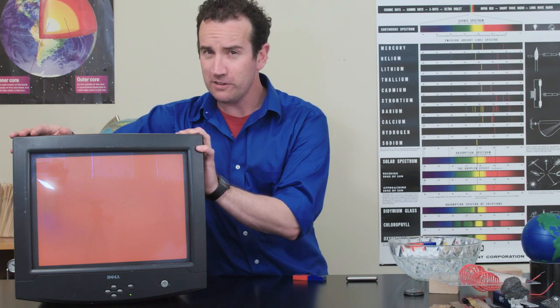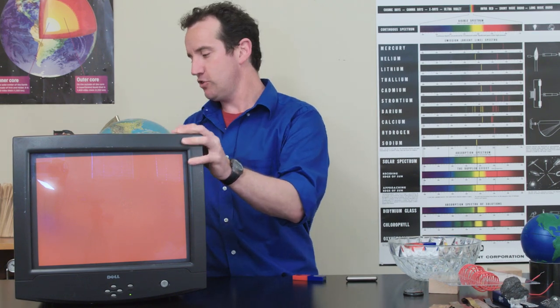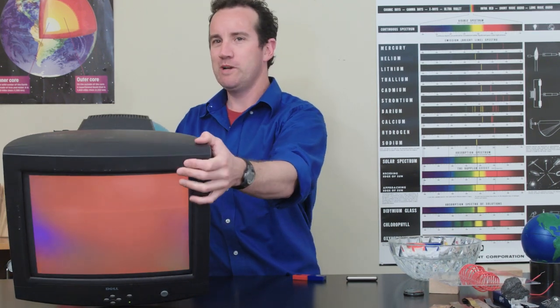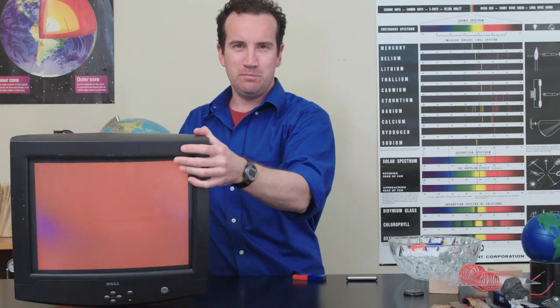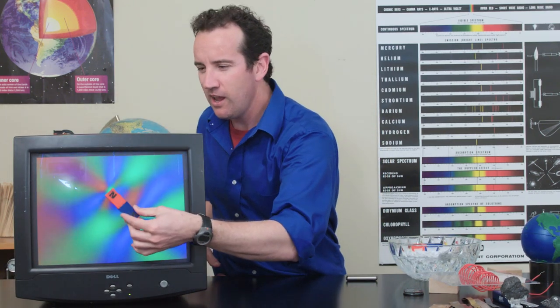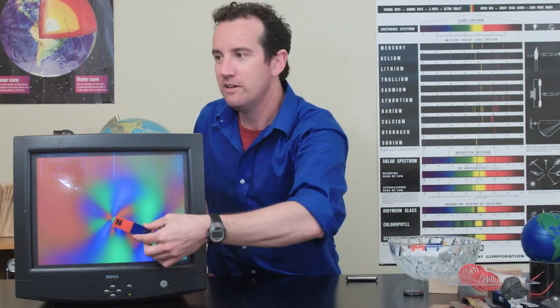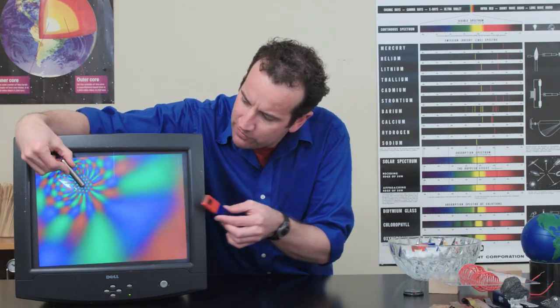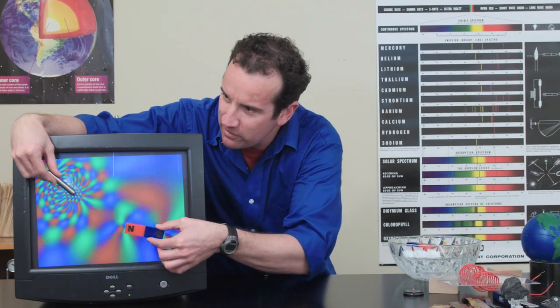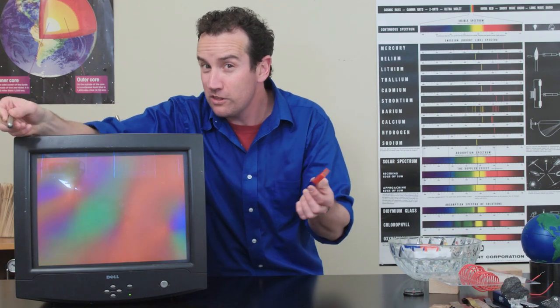You can also see the magnetic field with one of these old box-style TV screens that your parents have probably thrown away by now. You can see it's quite a big box. You bring a magnet up to the box screen, and you can see its field happening. And you can try another magnet and see if they're any different in strength. Which magnet do you think is stronger?